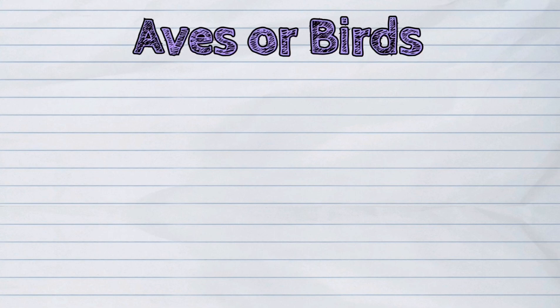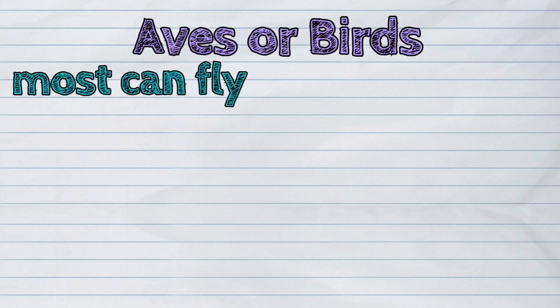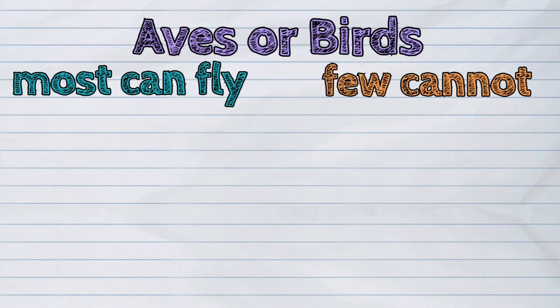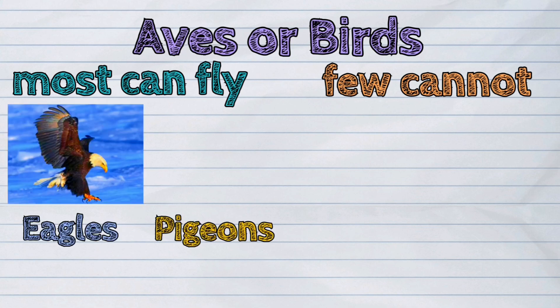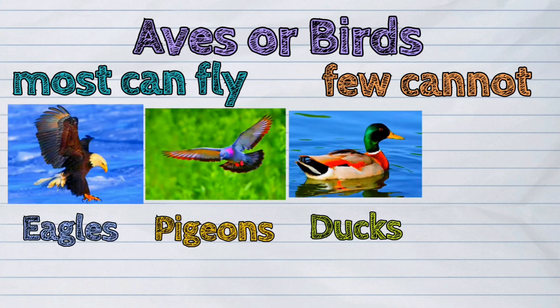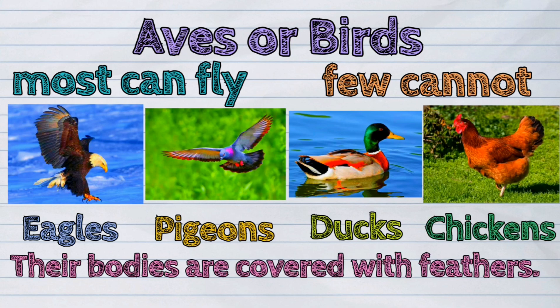Another group are the aves or birds. Most birds can fly but a few cannot. Some examples of birds are the eagles, pigeons, ducks, and chickens. Their bodies are covered with feathers.